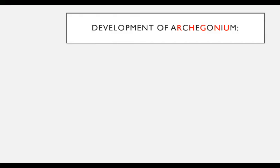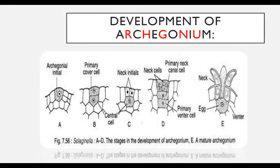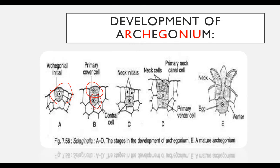Development of archegonium: a few cells near the apex of the female prothallus form the archegonial initial, which undergoes transverse divisions to form a primary cover cell and a lower central cell. This undergoes two vertical divisions at right angles to each other, forming four cells. These cells then undergo another transverse division, forming a neck of two tiers of four cells each.